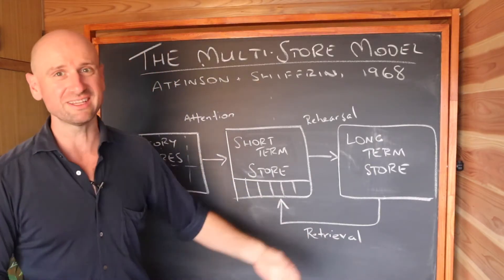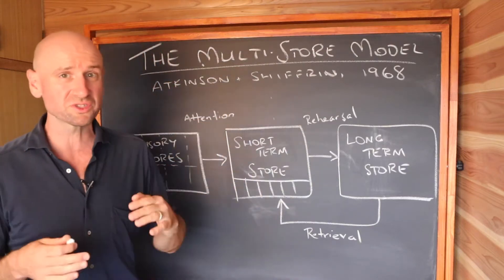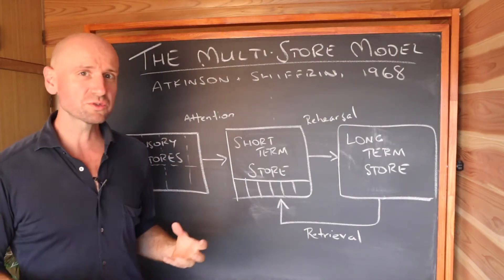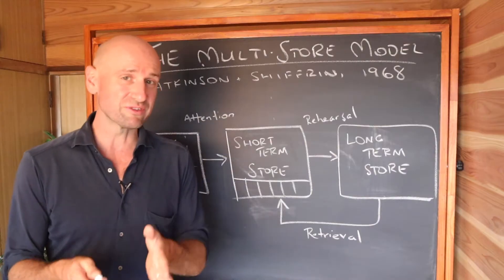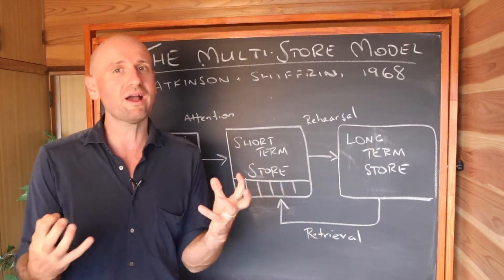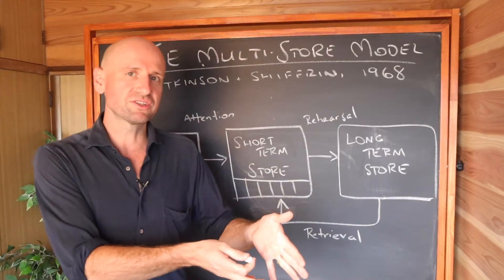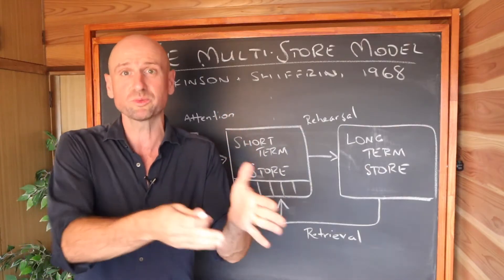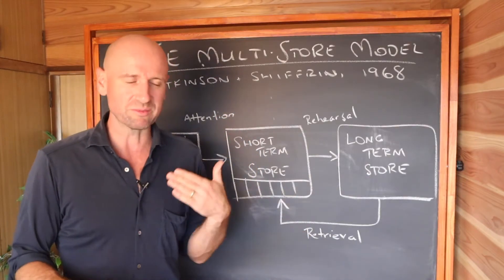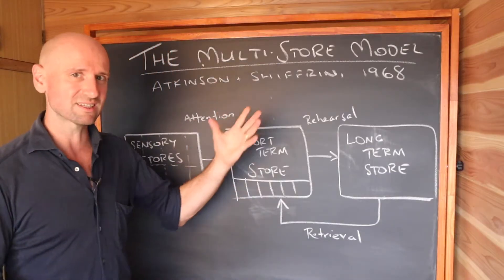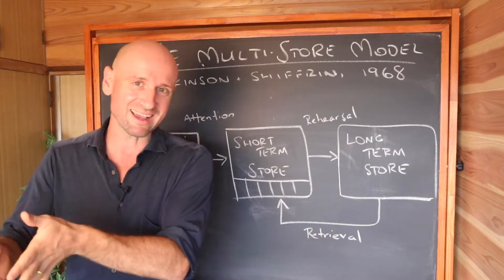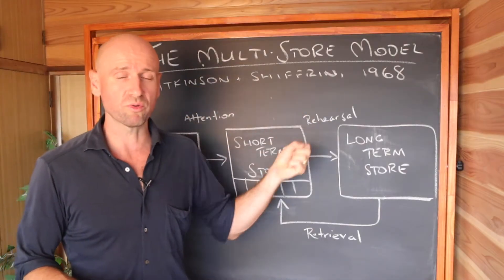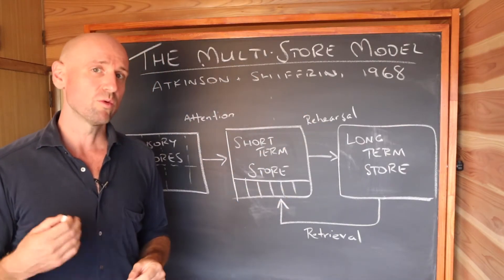So why are we learning about this model after 50 years? The multi-store model came about in the cognitive revolution of the 1950s and 60s, when there was a whole plethora of new studies on memory. This was in reaction to the behaviorist movement, which said we can't study the mind scientifically because we can't observe it — so they focused on observable actions only. But in the 50s and 60s, the scientific process was applied to the study of memory and cognition, and from this the multi-store model was born, along with a whole bunch of other memory theories.